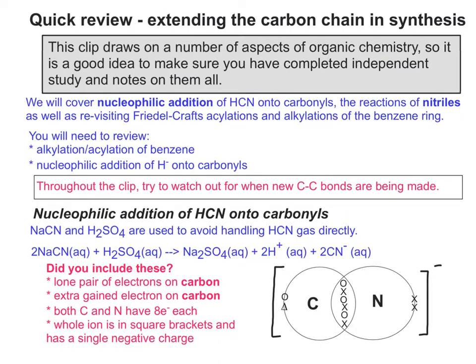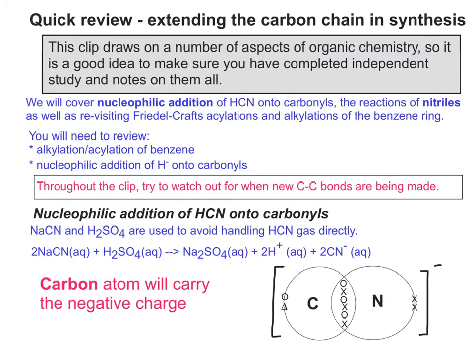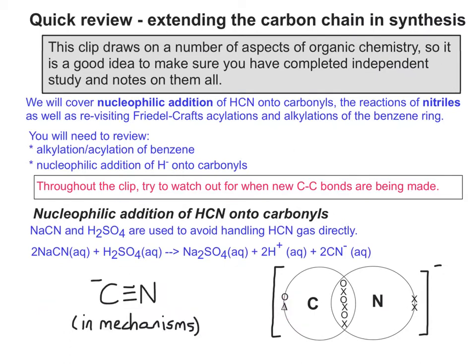You needed a lone pair of electrons on the carbon, with the extra gained electron also on the carbon. Both carbon and nitrogen have eight electrons each in their outer shells, and the whole ion is in square brackets with a single negative charge. It's carbon that actually carries this negative charge. For this reason, when using the cyanide ion in mechanisms, we write the negative charge next to the carbon — not forgetting the lone pair.